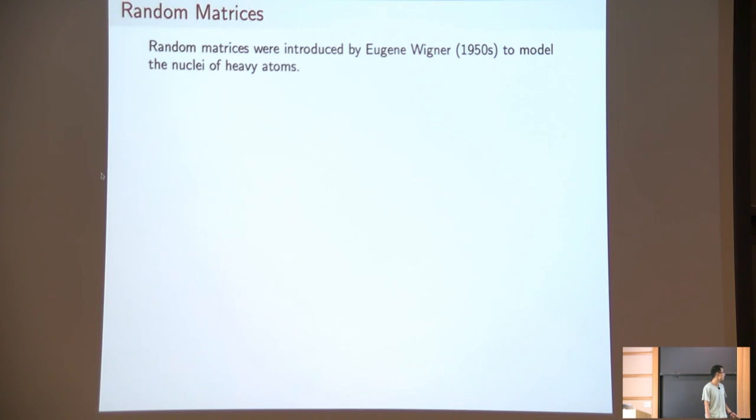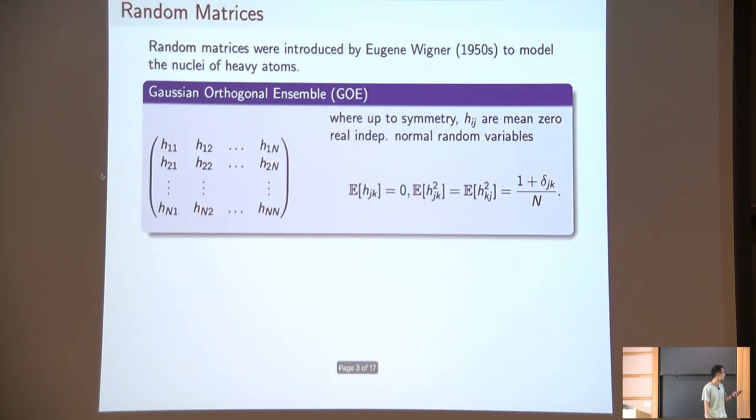The random matrix model he used is the Gaussian Orthogonal Ensemble, GOE. It's an n by n matrix, real symmetric. Each entry is a Gaussian random variable, which are independent, have mean zero. For the diagonal entries, the variance is 2/n, and for the off-diagonal entries, the variance is 1/n.